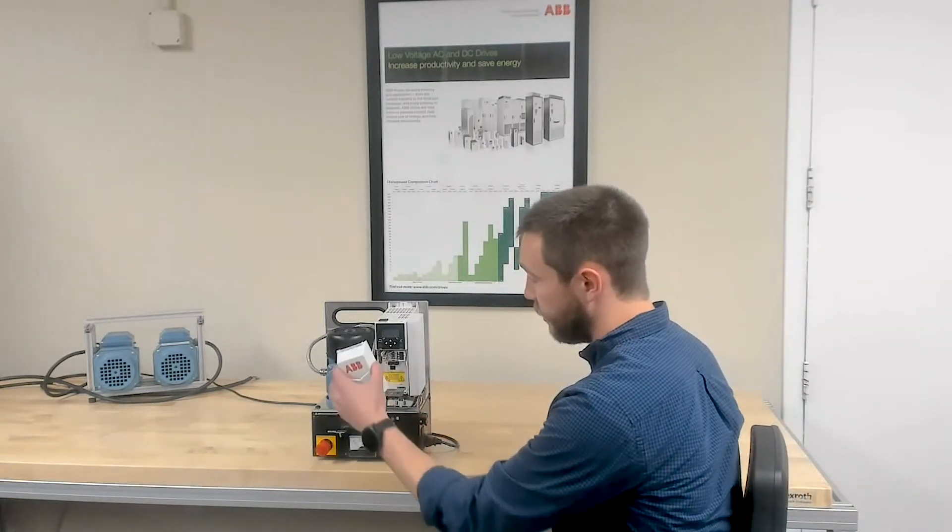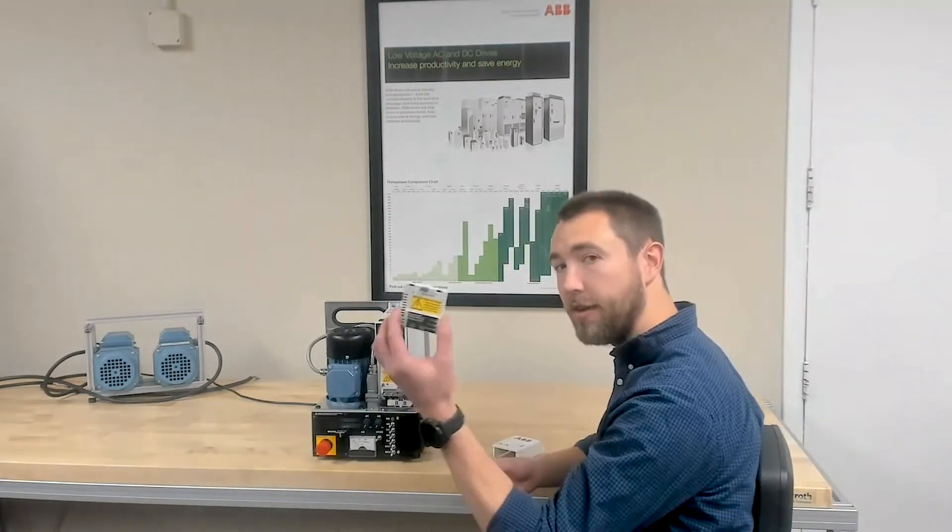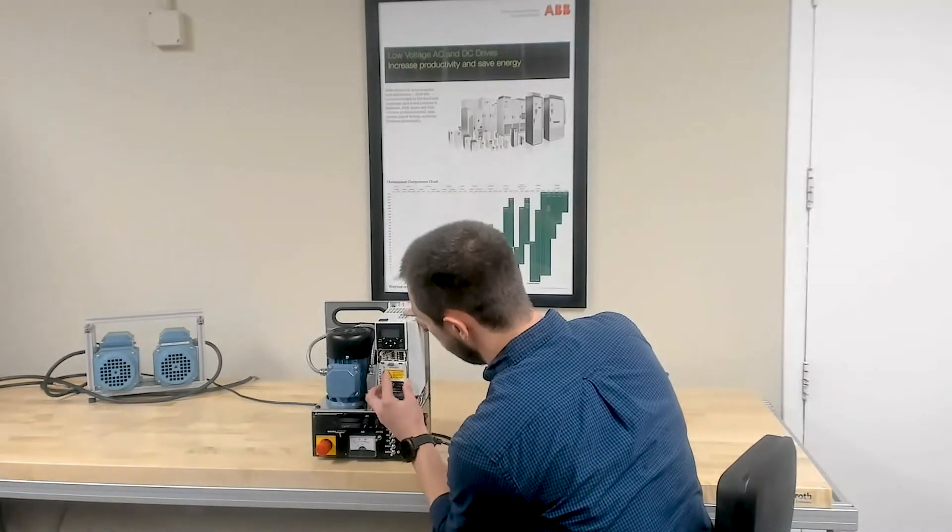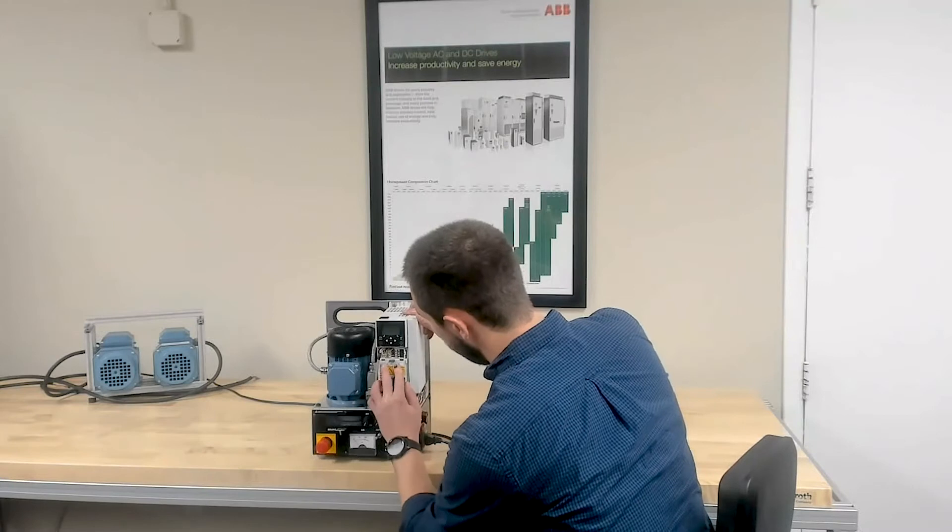Step one, we're going to take out this faceplate and install the Ethernet IP card. That just goes into option slot one and now I'm going to hand it off to Andrew Hennesak to show you how to parametrize the VFD.